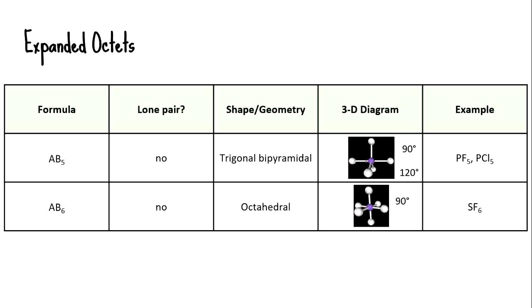The trigonal bipyramidal has two bond angles: 90 degrees from top to side, and 120 degrees between the equatorial atoms coming out toward you. For the octahedral, all bond angles are 90 degrees.